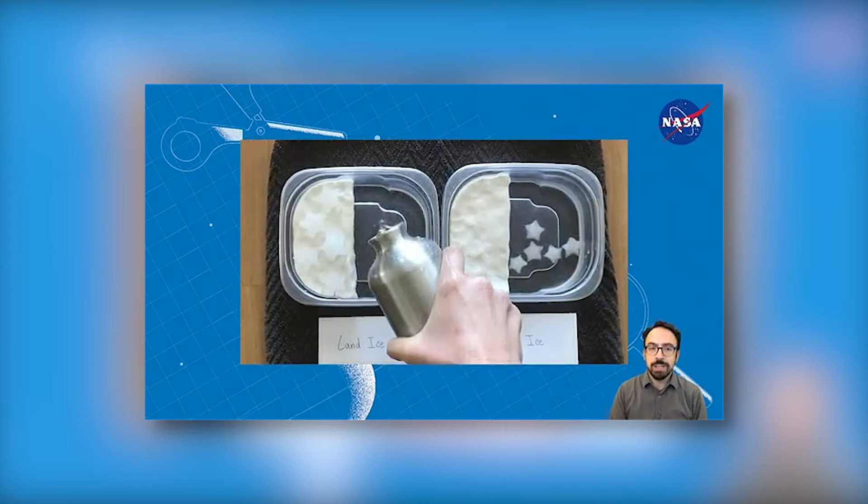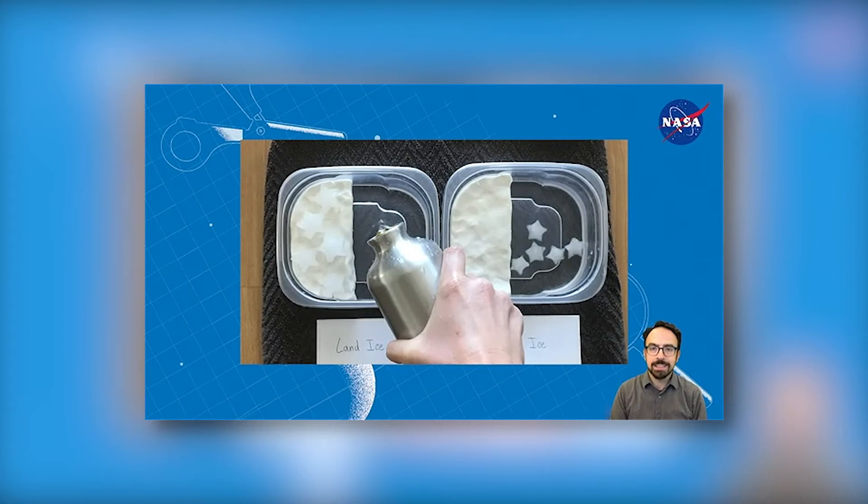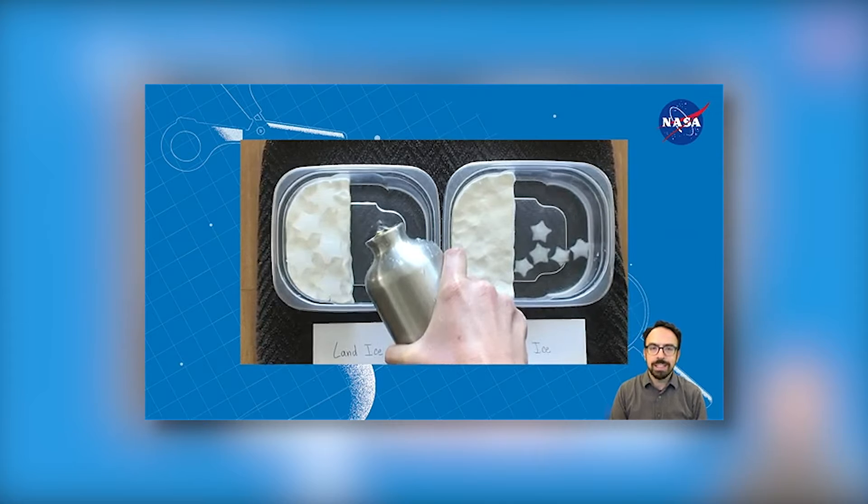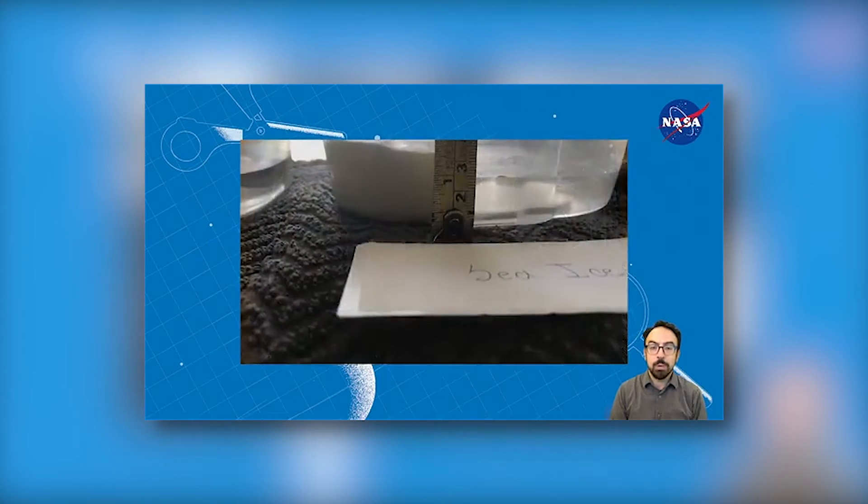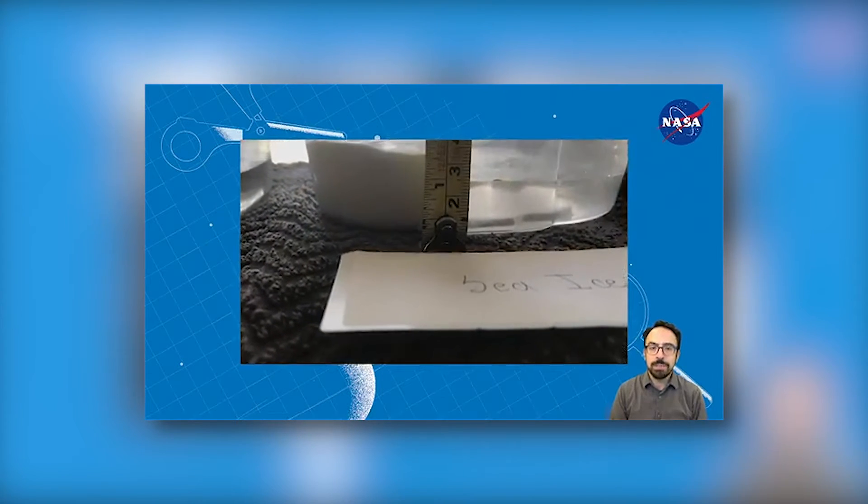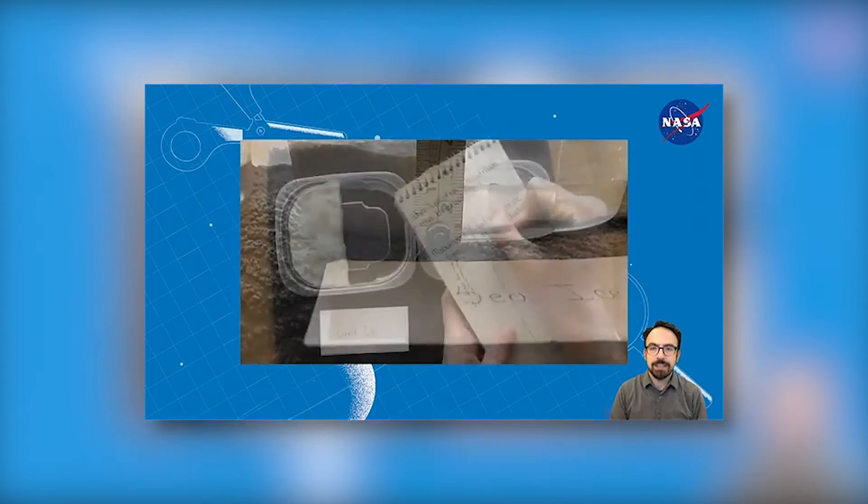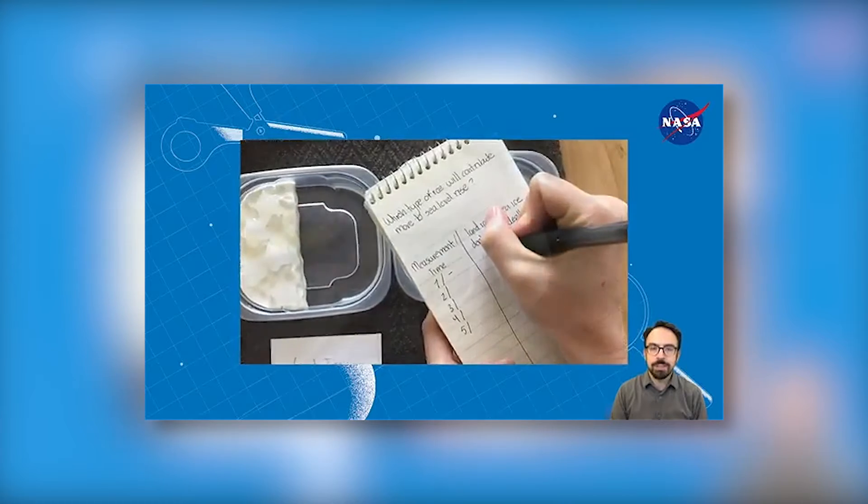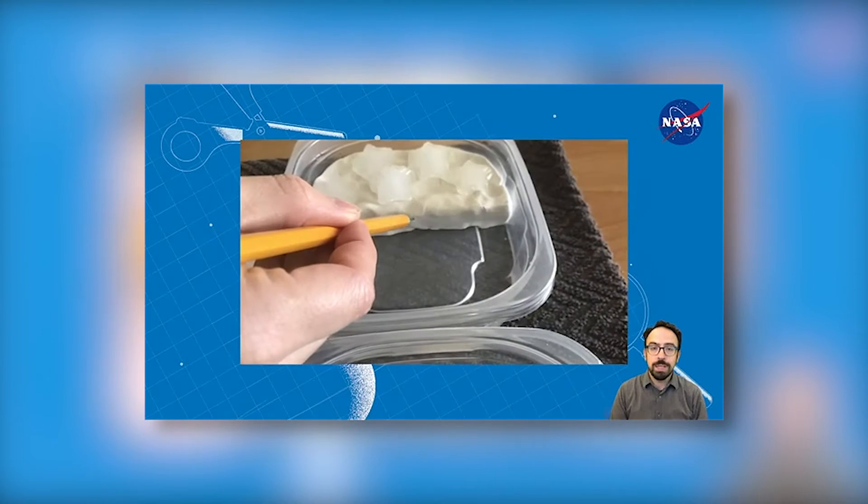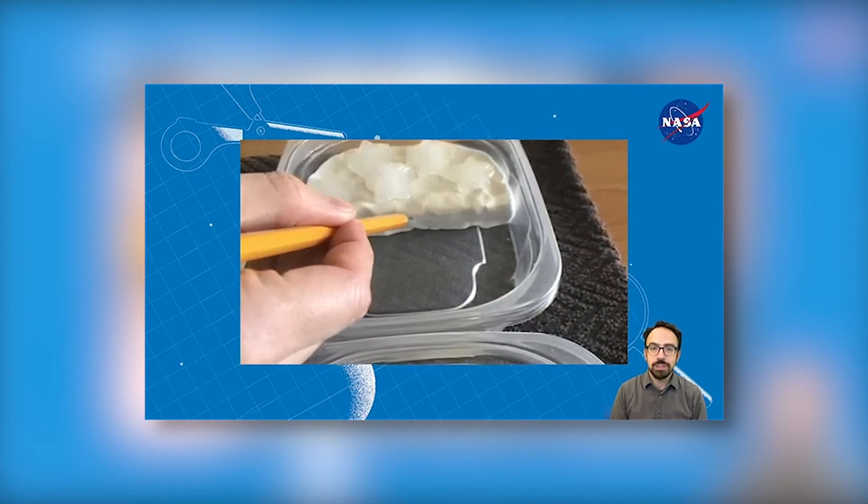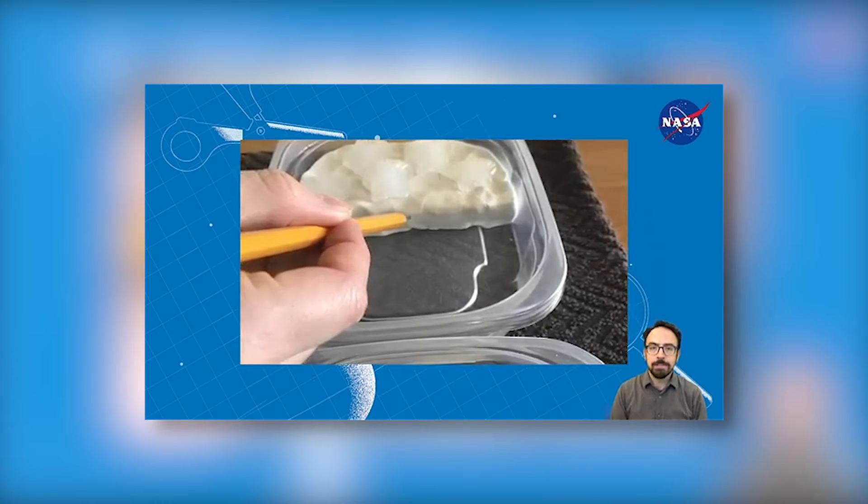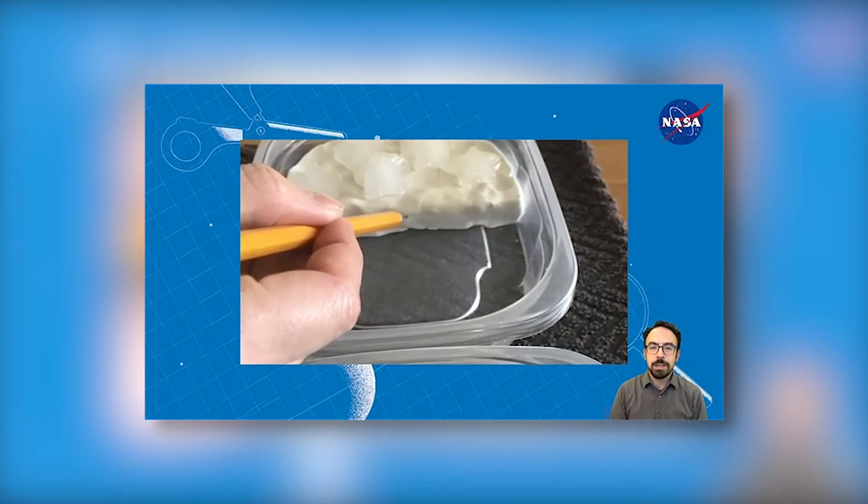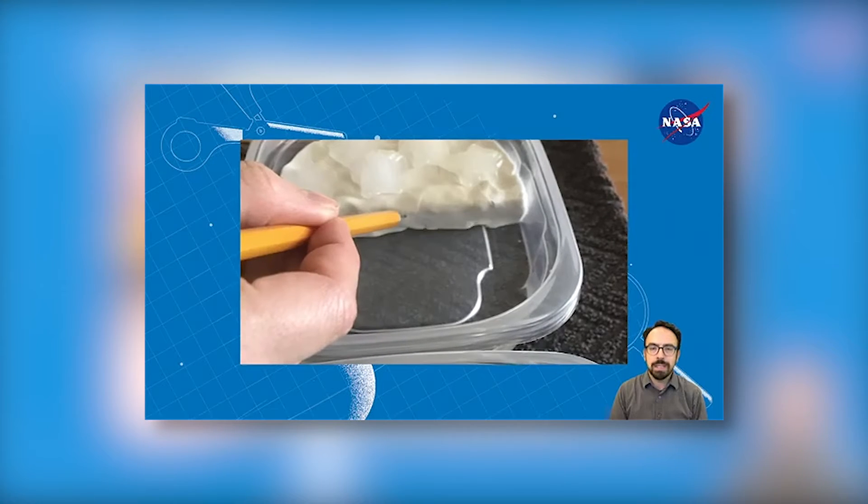Without disturbing the ice cubes on land, add water to the land ice container until the water level is about equal to the water level in the sea ice container. With water in both containers, carefully measure the water level in each container, in millimeters if you can, and record that data on a piece of paper. If you don't have a ruler, you can use a pencil tip to make a line in the clay or put a mark on the outside of the containers with a marker. But keep in mind, the ink might not come off.